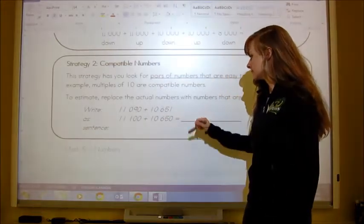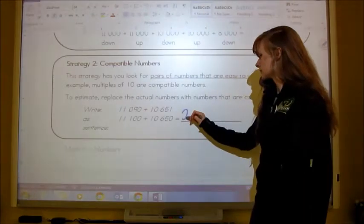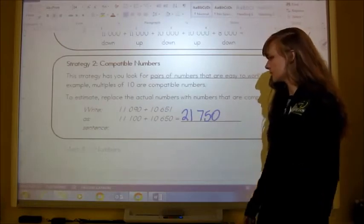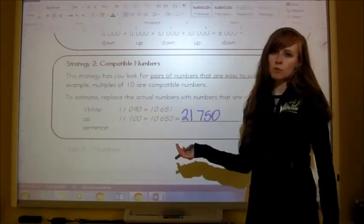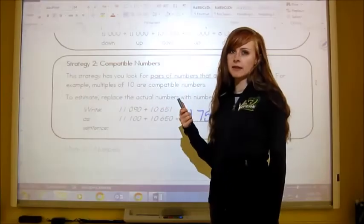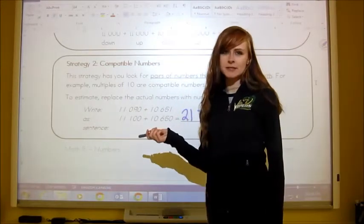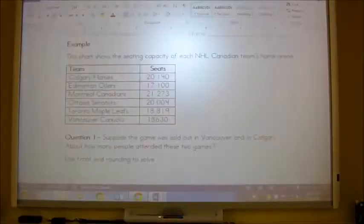Now I know that my answer is 21,750. And now we're accounting for more people than we had in the front end rounding. This is compatible numbers.